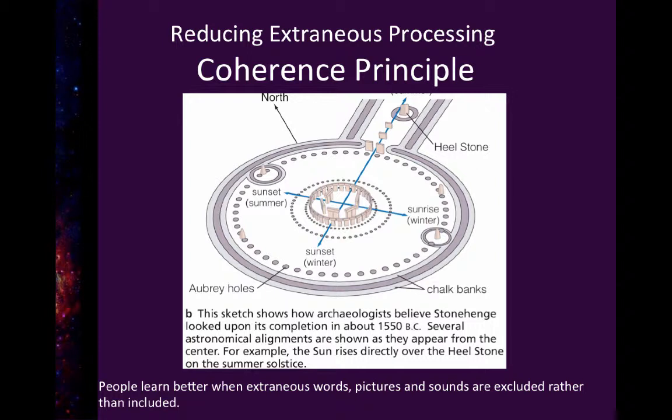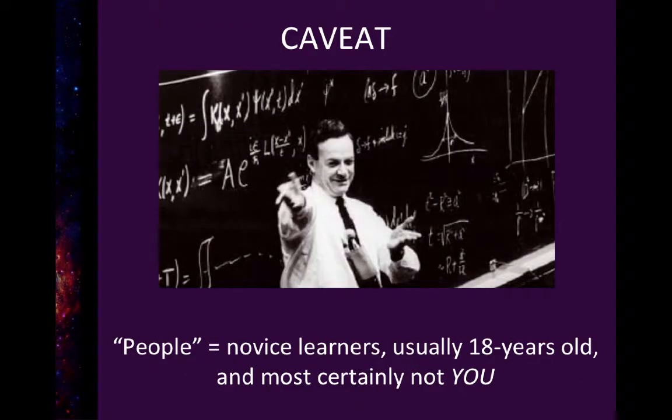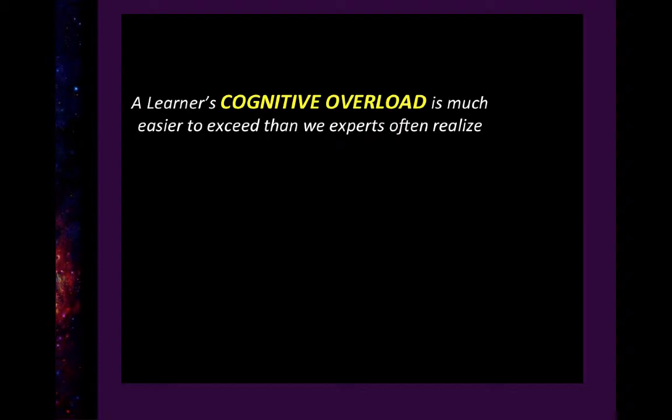Is that what you want students to know five minutes after they leave your planetarium, five months later, five years later? What we know is that people don't know what to pay attention to — they need some sort of coherence. We find that if you figure out exactly what you want people to know and remove everything else, students learn better. We're talking about students with a general interest in science and astronomy, but not the 10, 15, or 30 years of dedication many of you have spent. We're talking about people who just wander into your planetarium or take your introductory astronomy class.